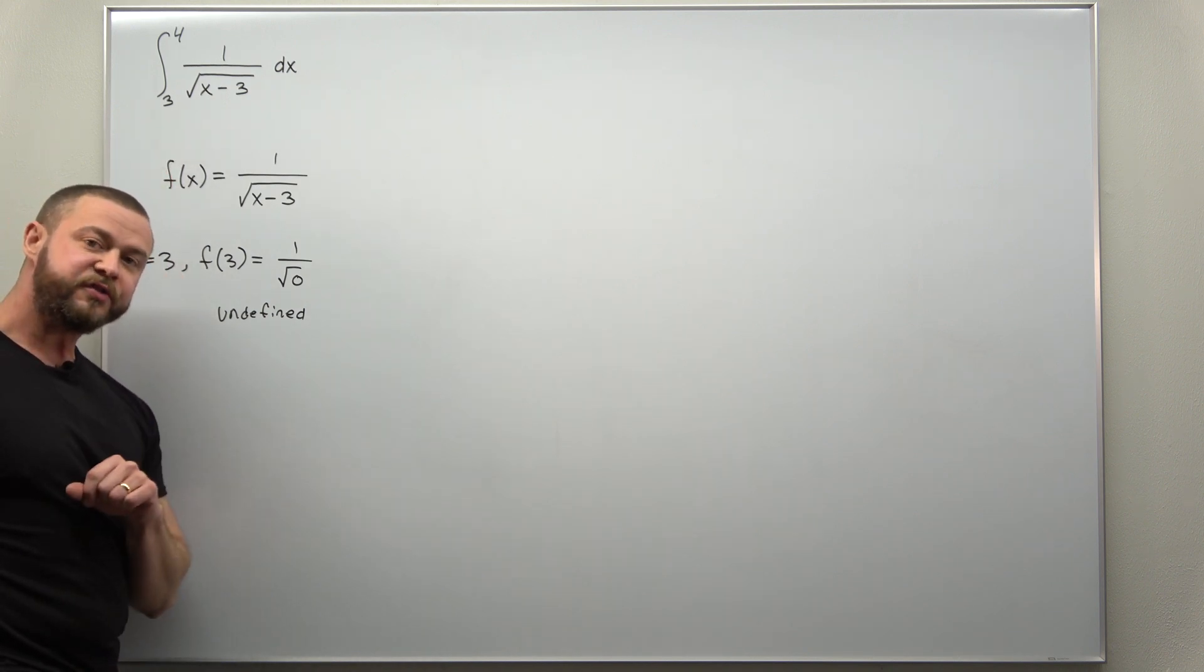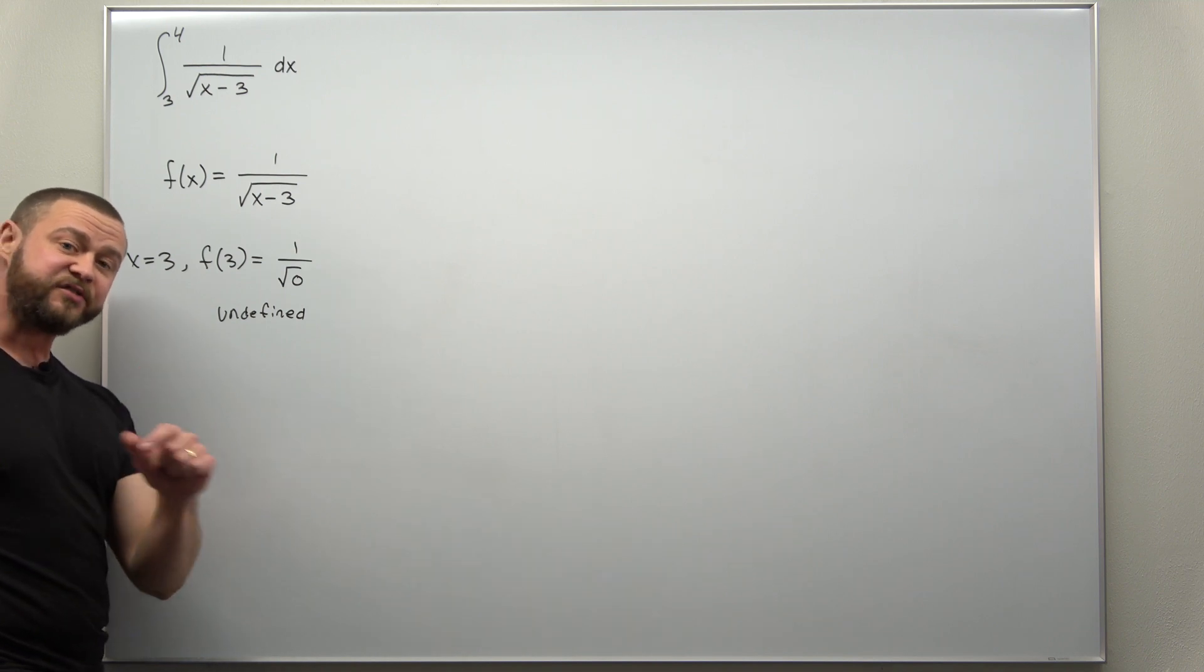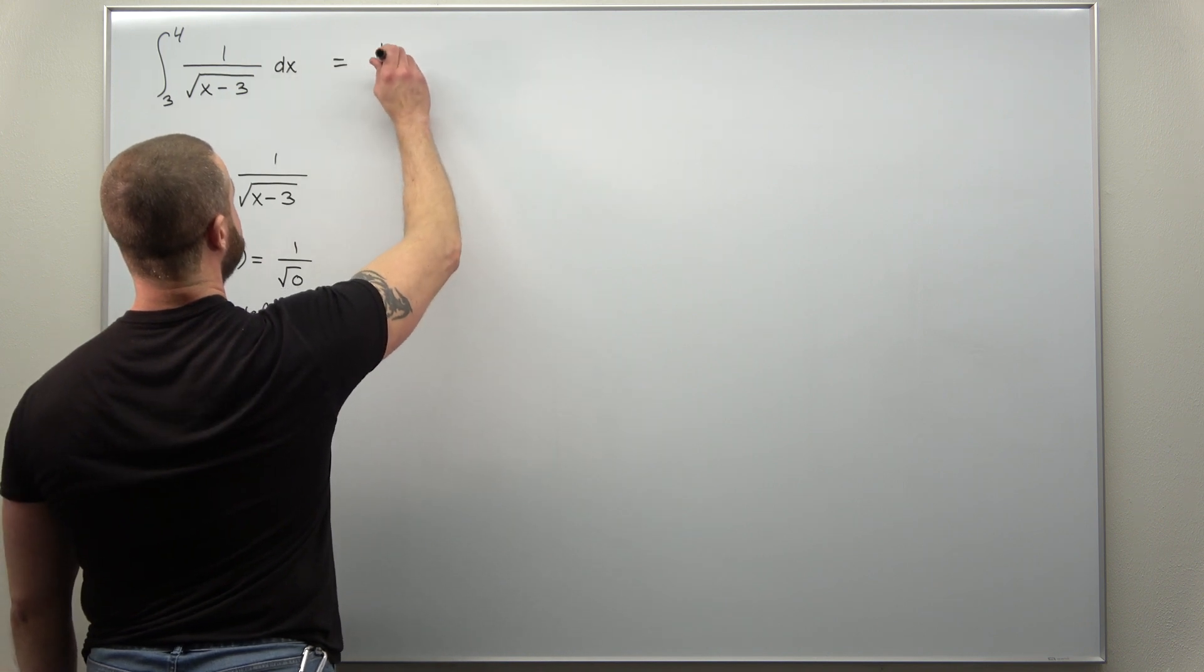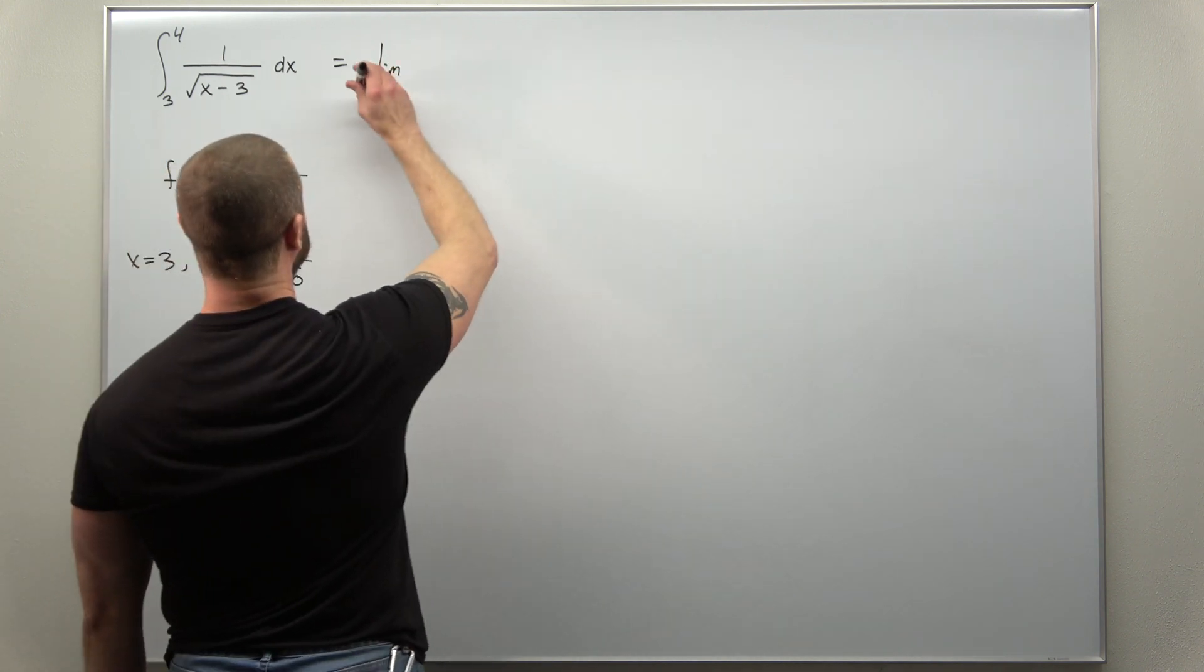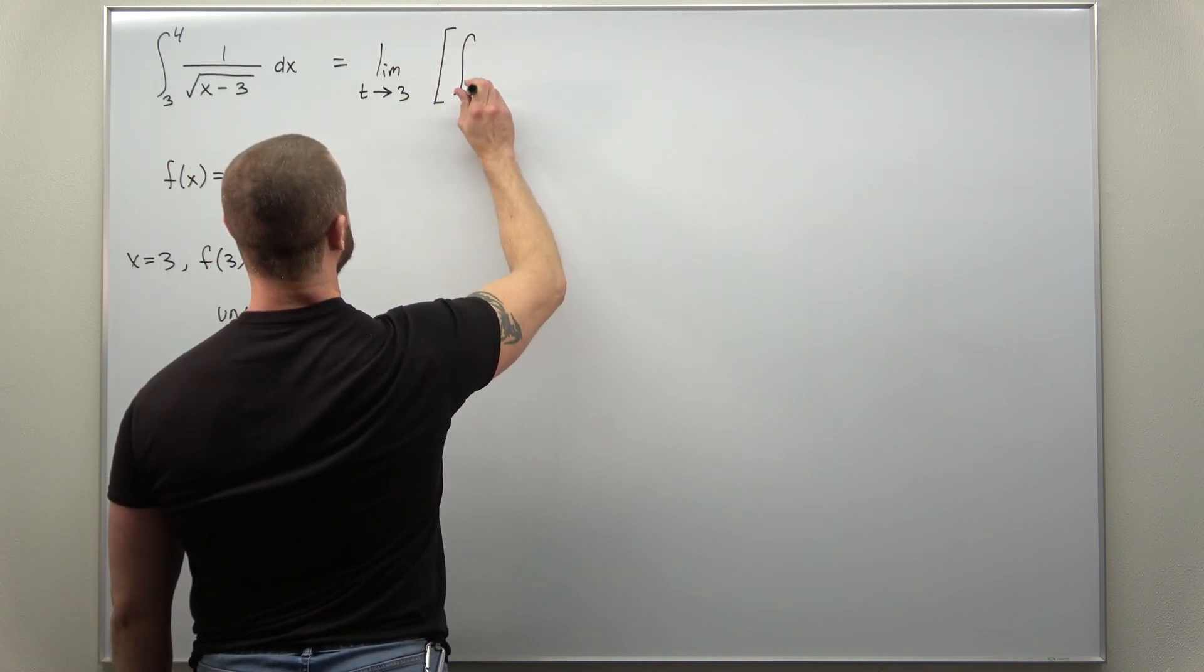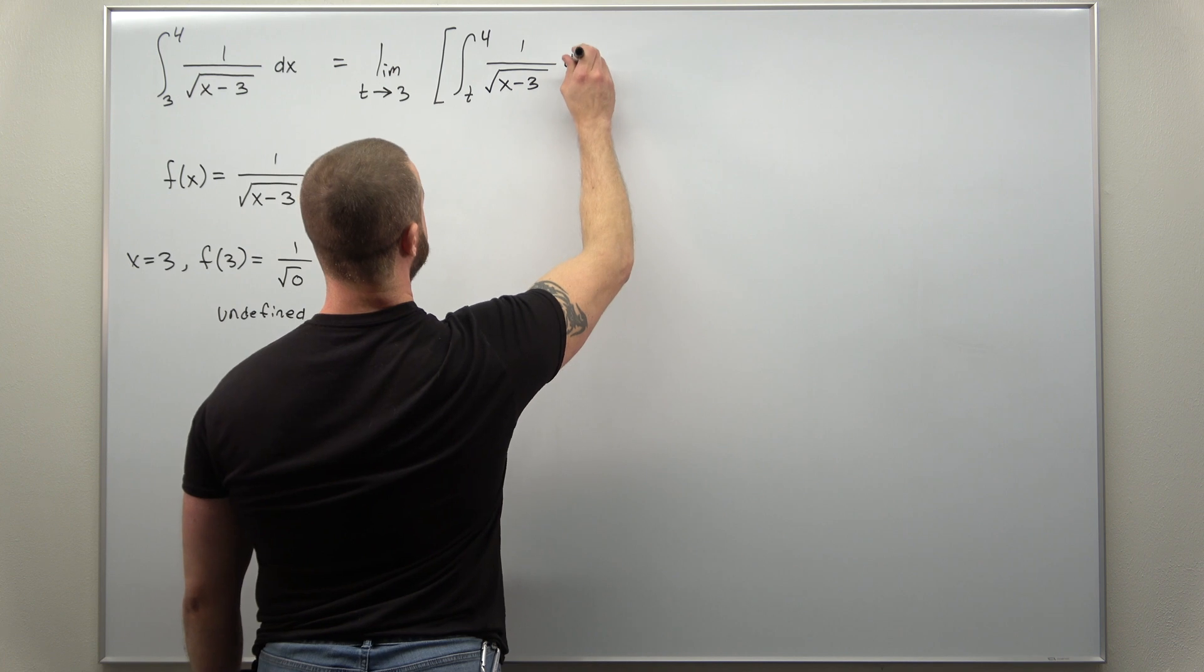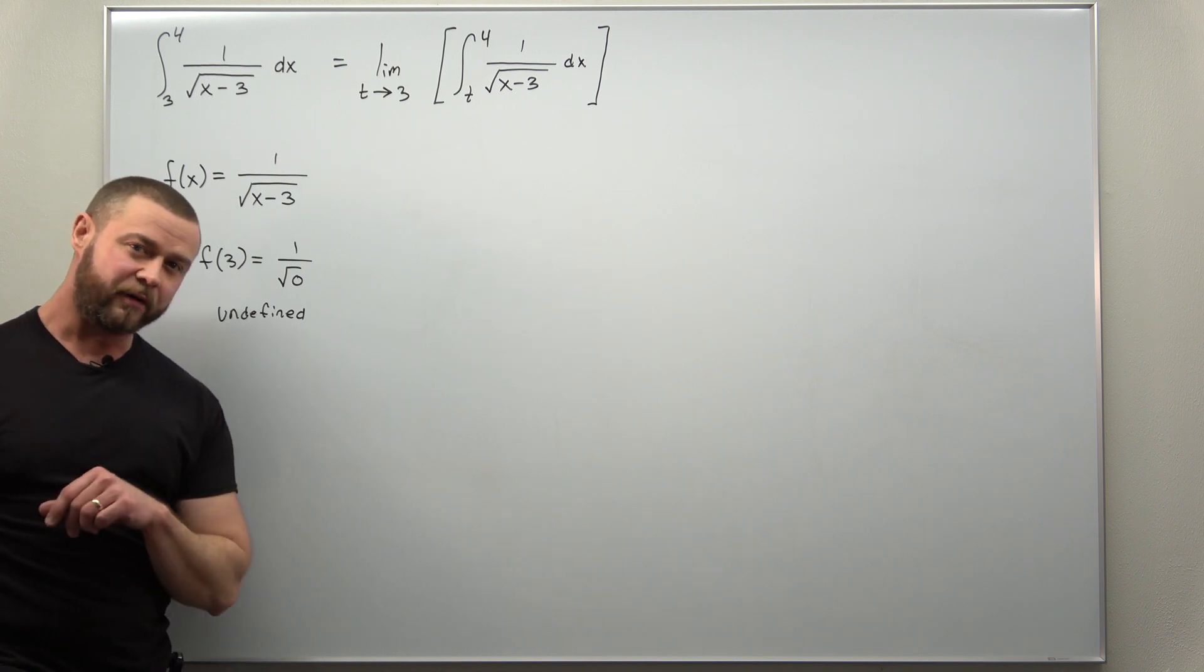Now to set this up properly, we do this the same way as the first type of improper integral. We take the part here, the lower limit that's giving us the improper integral, and replace that number with a variable. We'll go with t. So we're going to have a limit, and we're going to address what type of limit, perhaps a one-sided limit, but we'll get to that. What we're taking the limit of is the integral from t to 4, and we keep the function the same.